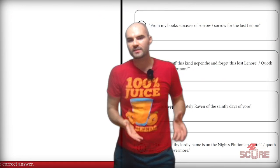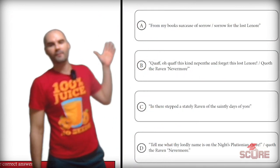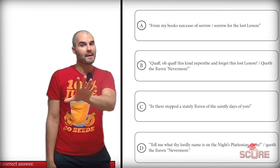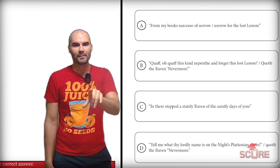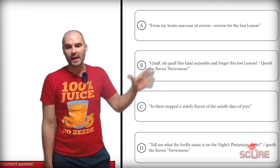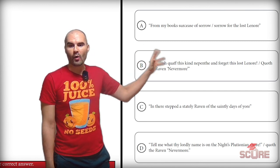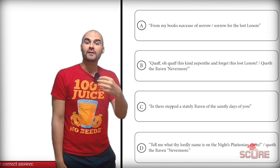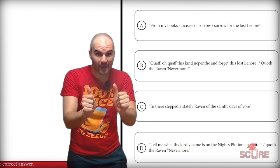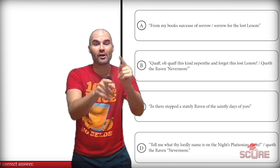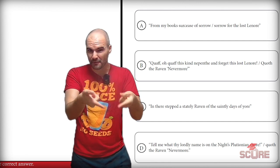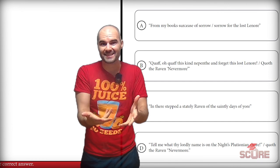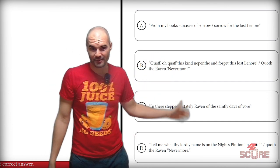So let's take a look at our answer choices. The first one says: 'From my books, surcease of sorrow, sorrow for the lost Lenore.' That might be the lost person we're talking about, but I don't see anything about a raven. Option B says: 'Quaff, oh quaff, this kind of nepenthe, and forget this lost Lenore. Quoth the raven, nevermore.' Now that sounds like the right answer — we mentioned the lost Lenore, but we also got the raven in there, so we have both parts of the claim. B is your best answer.